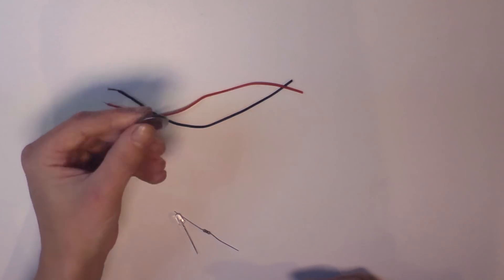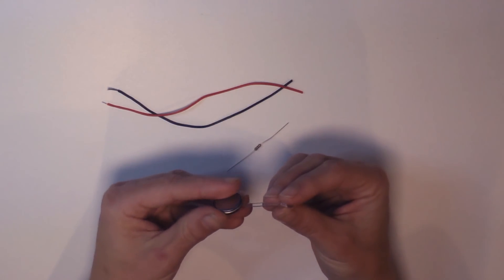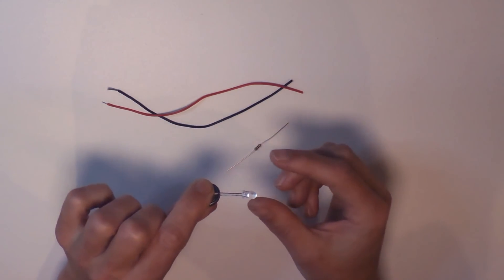Cut a red and black wire slightly longer than your unicorn horn. Test your LED with a coin cell battery and be sure you know which leg is which.